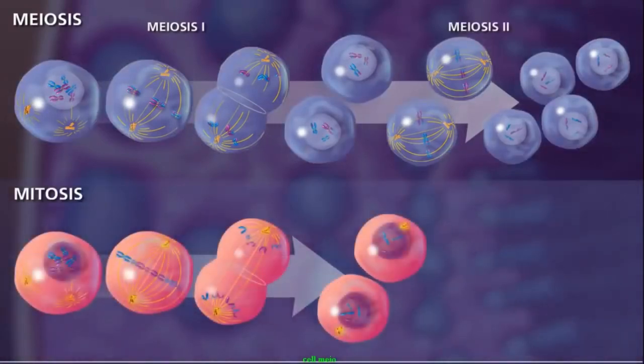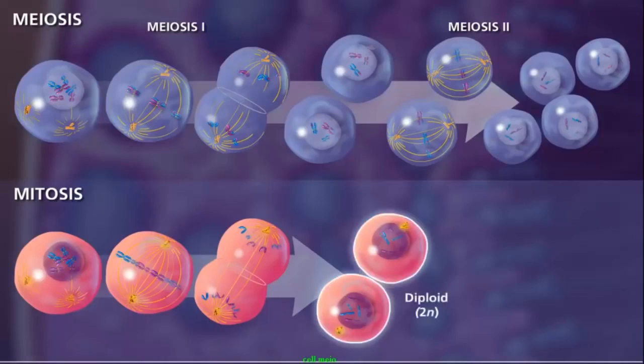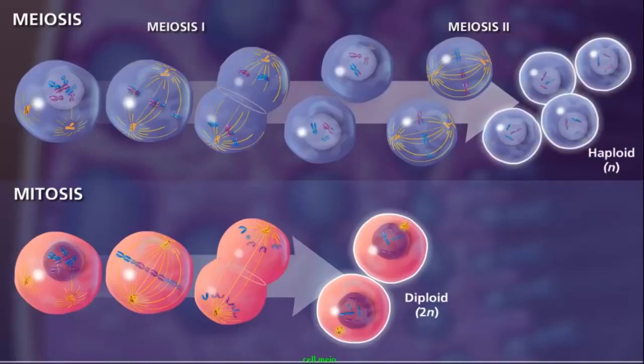Although the processes of mitosis and meiosis look similar, there are a few major differences. One obvious difference is that mitosis results in two diploid daughter cells and meiosis results in four haploid cells.